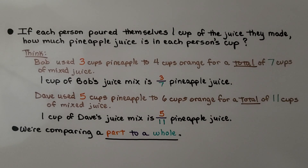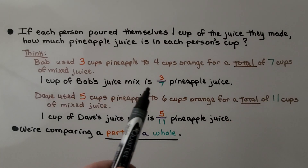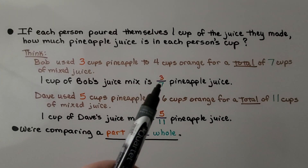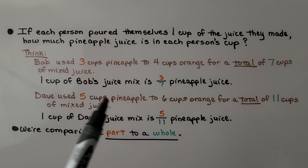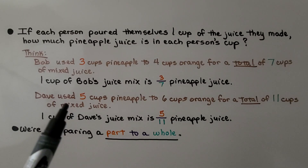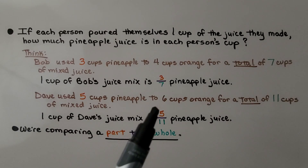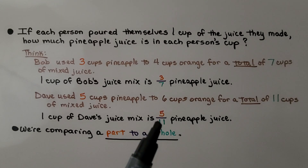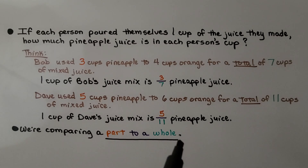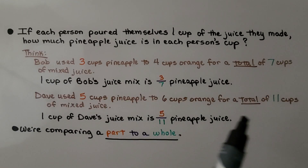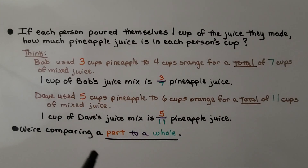If each person poured themselves one cup of the juice they made, how much pineapple juice is in each person's cup? Bob used 3 cups pineapple and 4 cups orange for a total of 7 cups, so 1 cup of Bob's mix is 3 sevenths pineapple juice. Dave used 5 cups pineapple and 6 cups orange for a total of 11 cups, so 1 cup of Dave's mix is 5 elevenths pineapple juice. Here we're comparing a part to a whole.